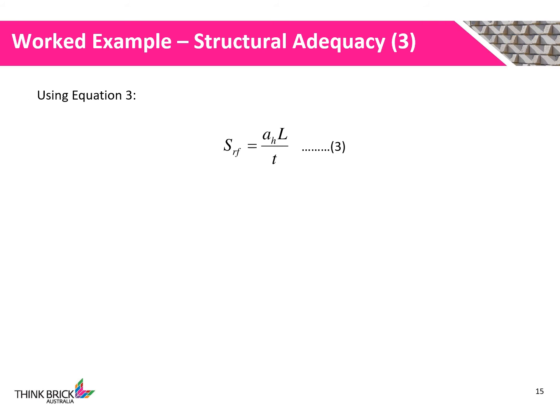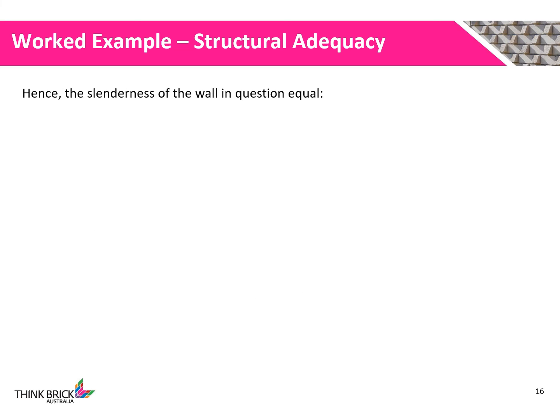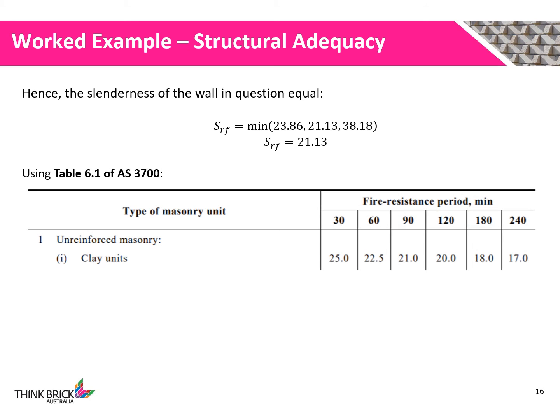Finally, we evaluate equation 3. Since the wall is supported along both vertical edges, a horizontal span coefficient of 1 is used. The length of the wall is 4.2m and the thickness is 110mm. Substituting into equation 3, we calculate a slenderness ratio of 38.18. We can now determine the slenderness ratio of the wall by selecting the minimum from the three values — 23.86, 21.13, and 38.18 — giving a slenderness ratio of 21.13.